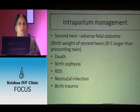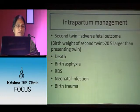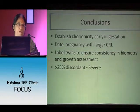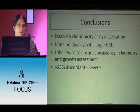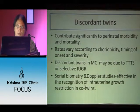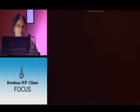For intrapartum management: when there is discordance and the second twin is larger by more than 500 grams, there is a higher risk of death, asphyxia, RDS, and neonatal infections. To conclude: whenever you see discordancy, determine if it is monochorionic or dichorionic, assess the degree of discordancy and chorionicity, evaluate linear growth velocity and other surveillance tests. For discordant monochorionic twins, exclude twin-to-twin transfusion, and do serial biometry and Doppler studies to manage twins effectively and deliver them on time.